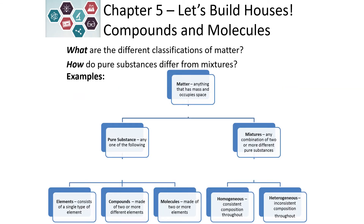Let's look at another way that we can classify our matter. Can it be separated by physical means? This is taking into consideration physical changes or physical properties that we can use to separate our sample. If we cannot separate it by physical means — such as filtering it, boiling it, or evaporating it — then it is a pure substance. If we can separate it by physical means, then it is a mixture, a combination of two or more different pure substances.